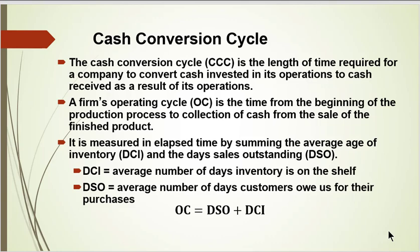The operating cycle is the first part of this. It measures the time from when we purchase inventory or make a product to the actual receipt of receivables from cash sales done on credit. The two times that we measure: the first one is DCI, days carry inventory — the average number of days inventory is on the shelf. DSO is the average number of days customers owe us for their purchases; it's an accounts receivable measure. When you add those two together, that's what we refer to as the operating cycle.